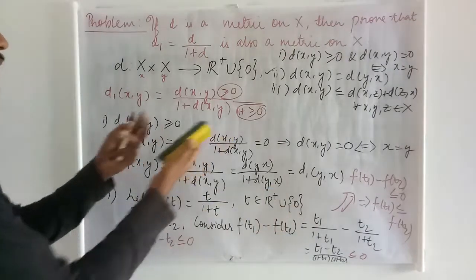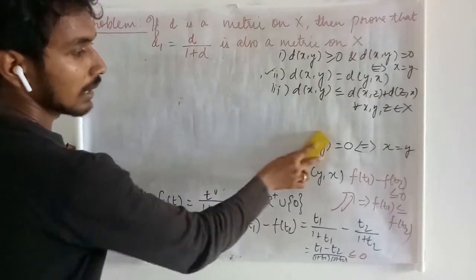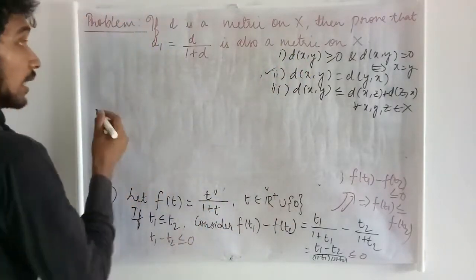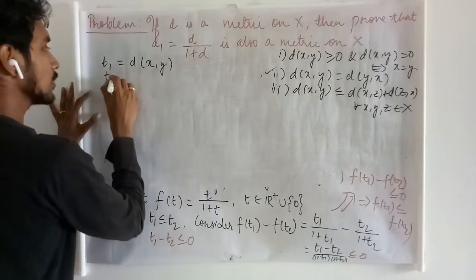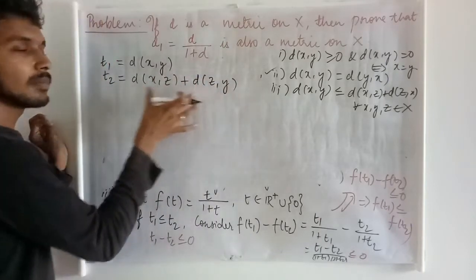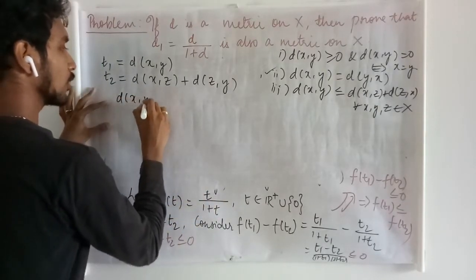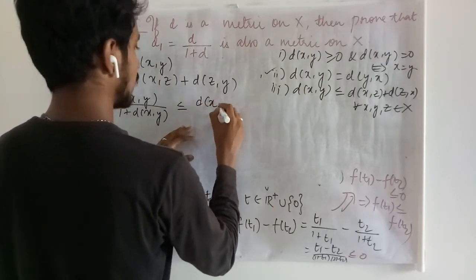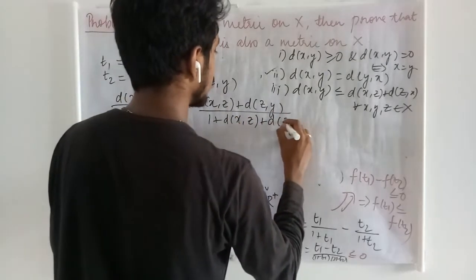Now we are going to apply this to get the triangle inequality. In place of T1, I am going to substitute D(x,y), which is a non-negative quantity. In place of T2, I am going to substitute D(x,z) + D(z,y), which is a sum of two non-negative quantities, hence also non-negative. Substituting, we get D(x,y) upon 1 plus D(x,y) ≤ D(x,z) + D(z,y) upon 1 plus D(x,z) + D(z,y).